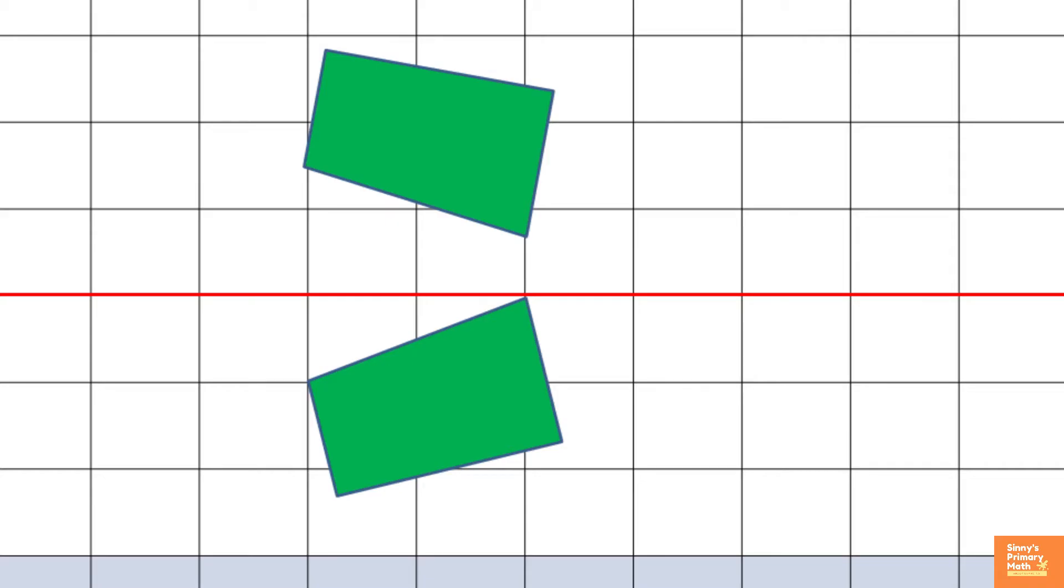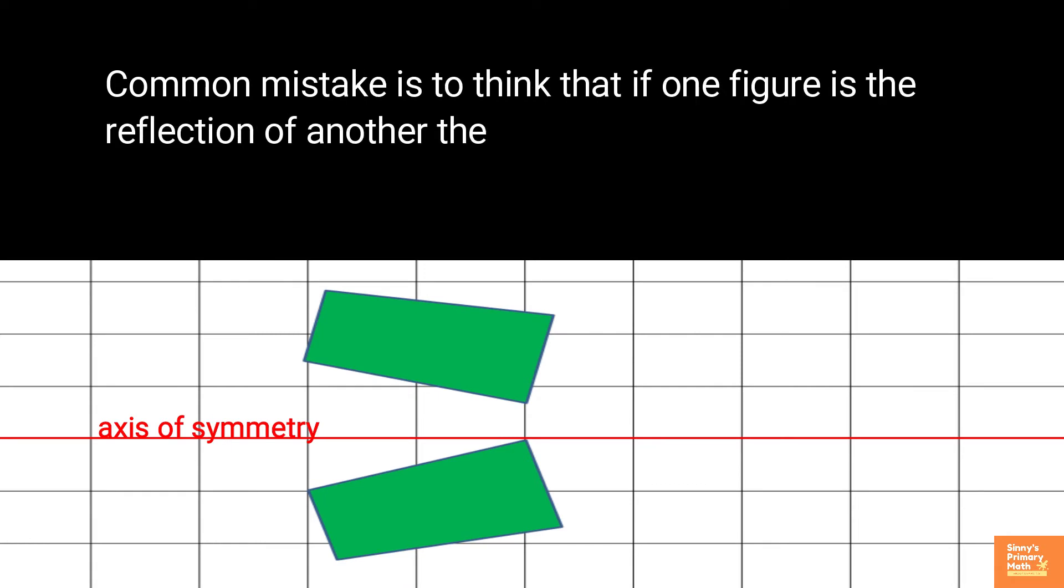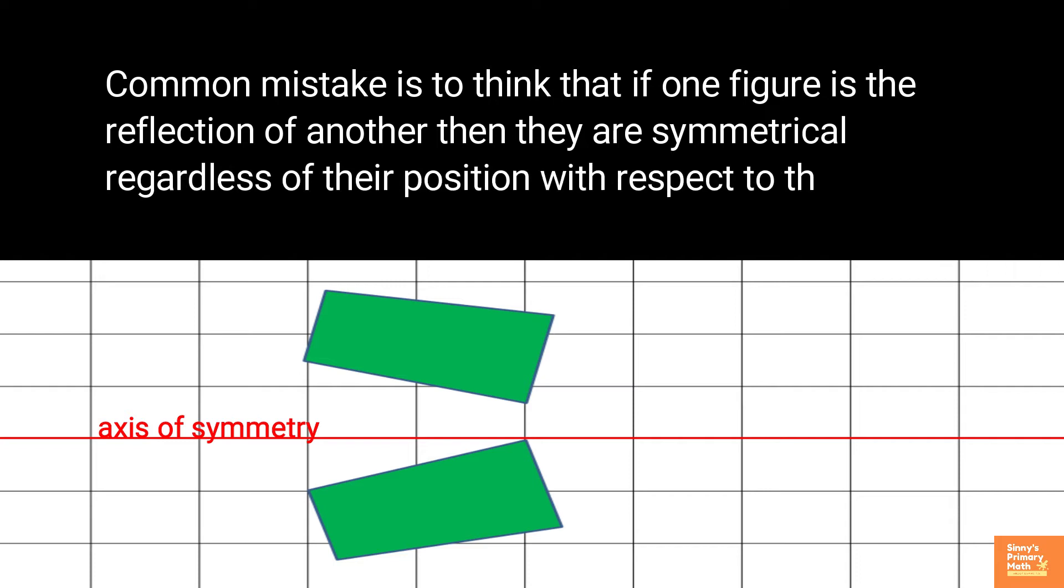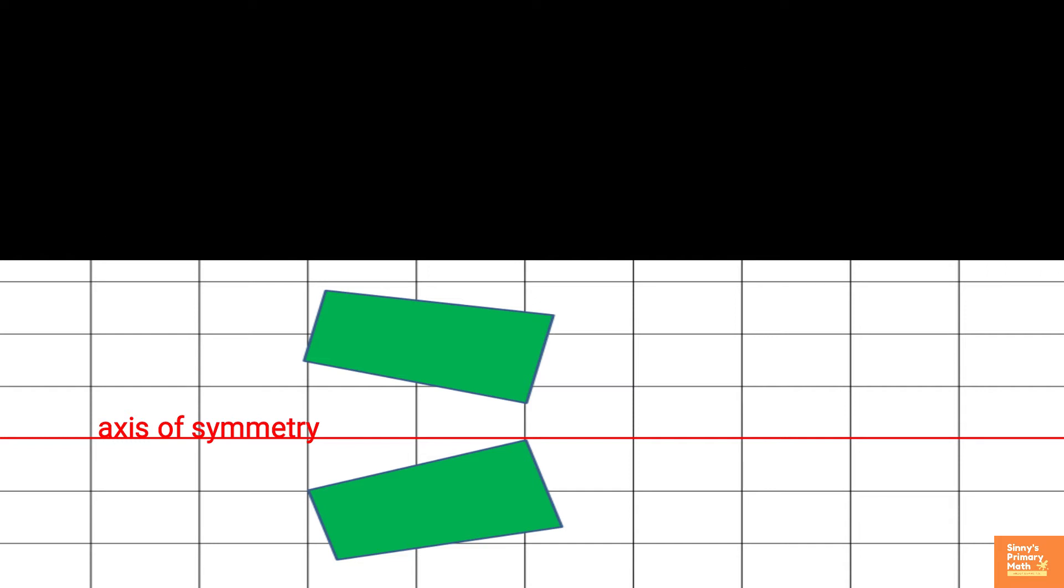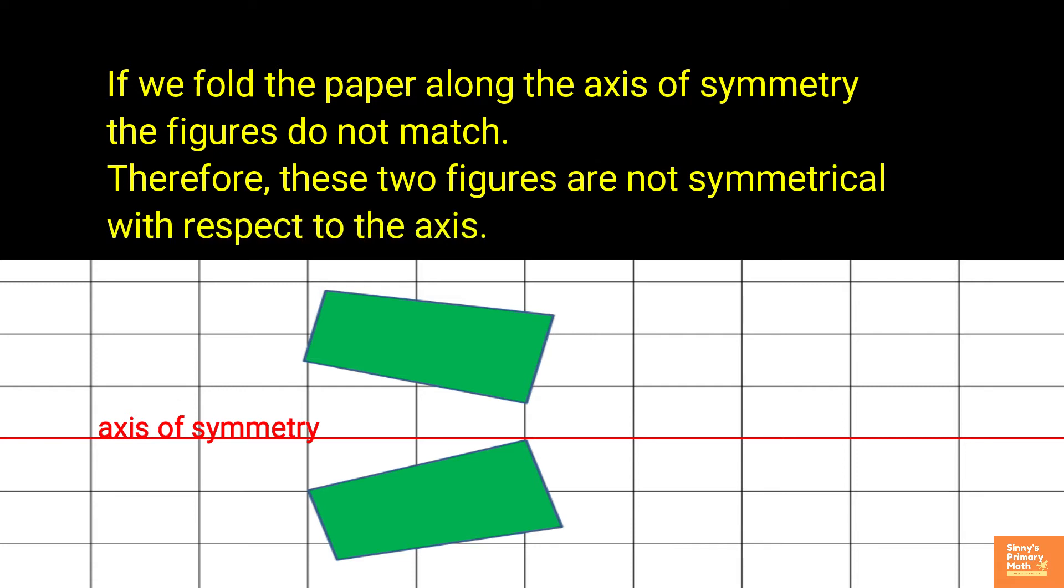Look at the figures shown. Another common mistake is to think that if one figure is the reflection of another, then they are symmetrical regardless of their position with respect to the axis of symmetry. If we fold the paper along the axis of symmetry, the figures do not match. Therefore, these two figures are not symmetrical with respect to the axis.